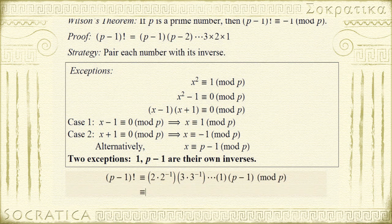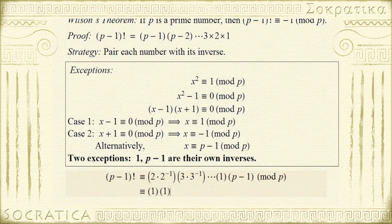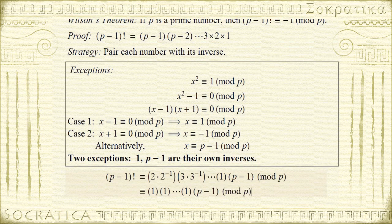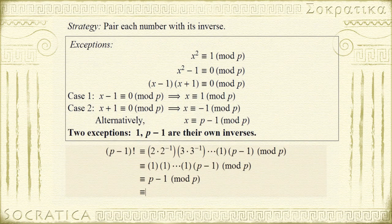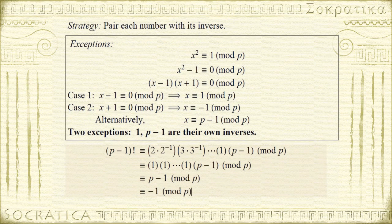Now 2 times its inverse is 1. 3 times its inverse is 1. And so everything cancels out. And what we're left with is p minus 1, which as we saw just above is the same thing as negative 1 mod p.